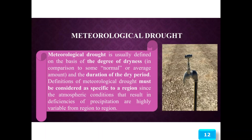Meteorological drought is usually defined on the basis of the degree of dryness in comparison to some normal or average amount, and the duration of the dry period. The definition of meteorological drought must be considered as region-specific, since the atmospheric conditions that result in deficiencies of precipitation are highly variable from region to region.